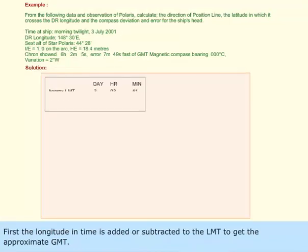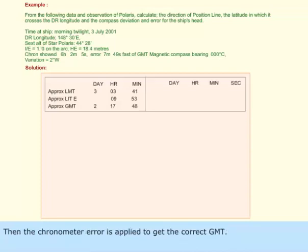First, the longitude in time is added or subtracted to the LMT to get the approximate GMT. Then the chronometer error is applied to get the correct GMT.